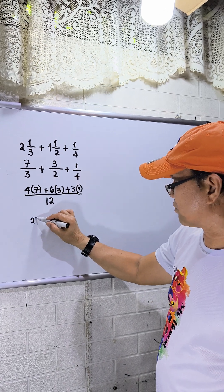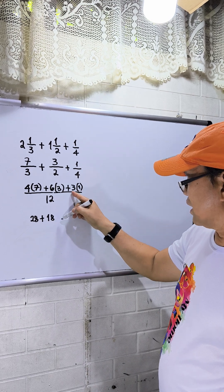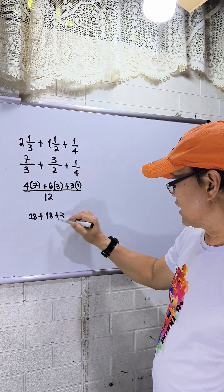4 times 7, that is 28. Then 6 times 3, that will be 18. Then 3 times 1, that is 3. This will be over 12.